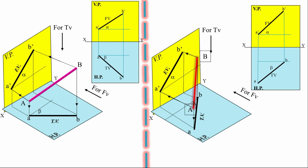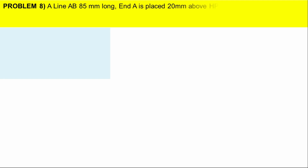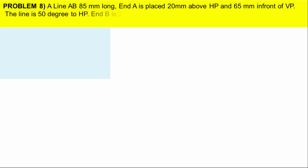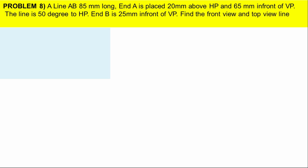Let's see the problem. A line AB is 85 mm long. End A is placed 20 mm above HP and 65 mm in front of VP. The line is 50 degrees to the horizontal plane and B is 25 mm in front of VP. Find the front view and top view line lengths and draw the projections.